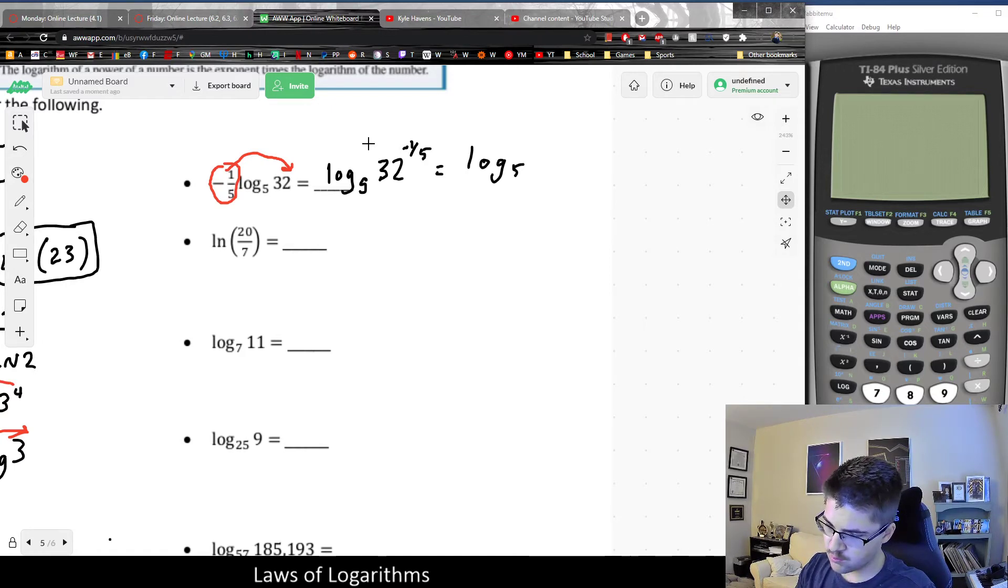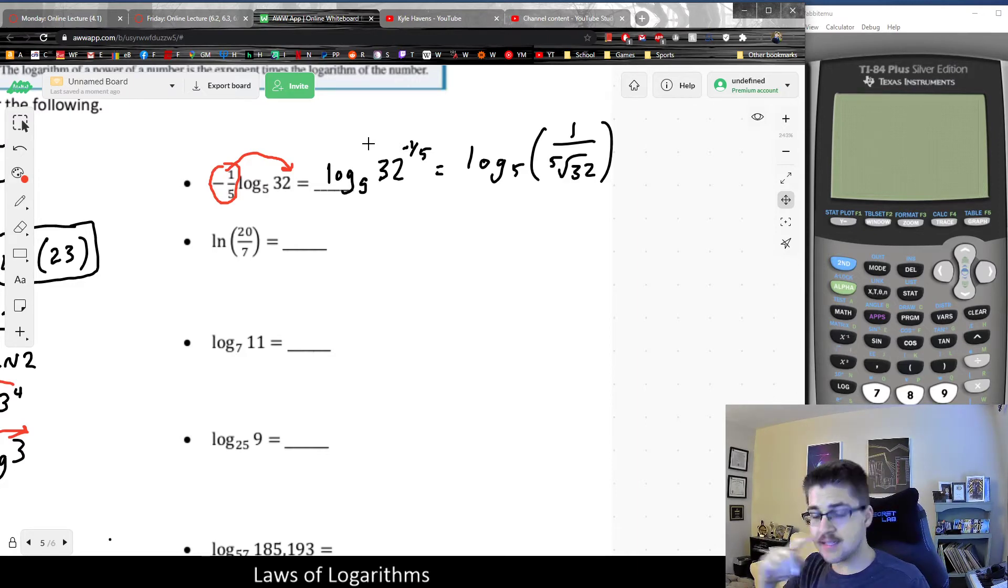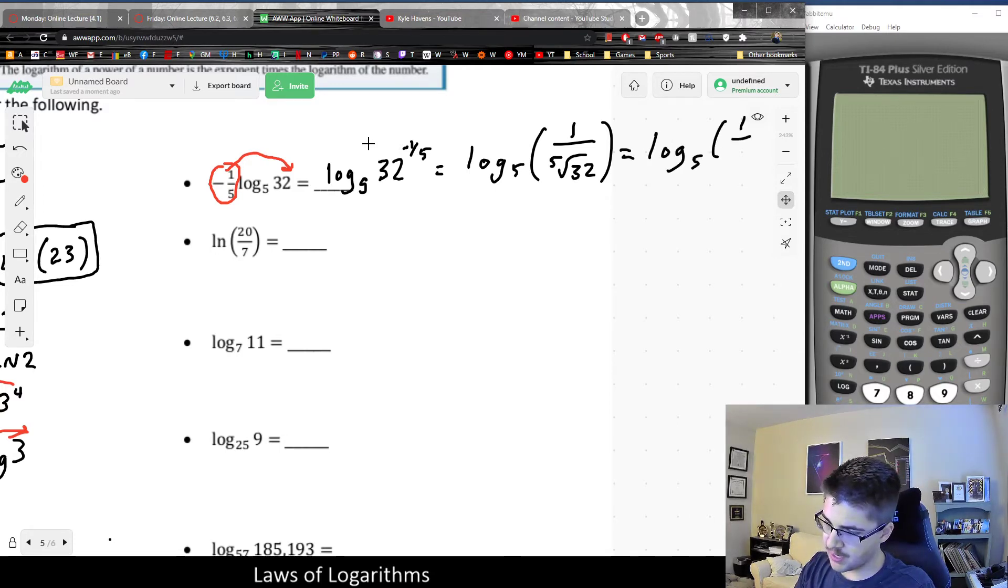A negative one-fifth power is equal to the reciprocal raised to the fifth root by rules of exponents. So I could rewrite this as 1 over the fifth root of 32, and the fifth root of 32 is exactly 2. So I'd be left with a log base 5 of 1 half.